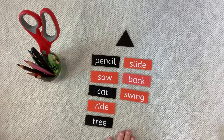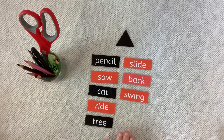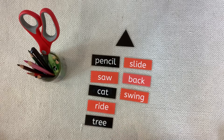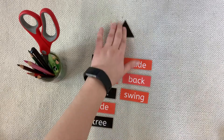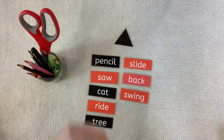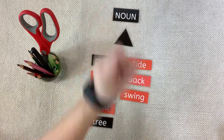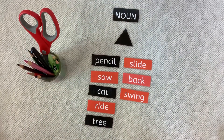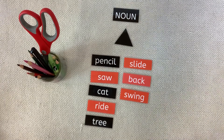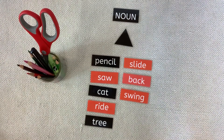All of these words are names. Words that name people, places, or things are called nouns. A noun names a person, place, or thing.